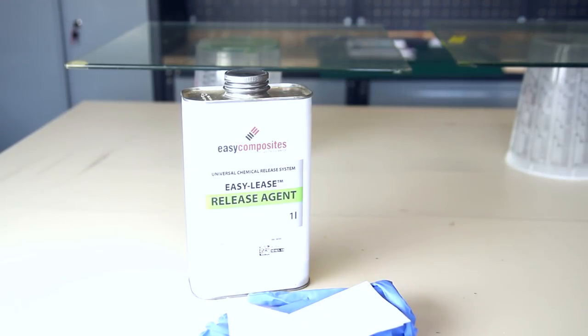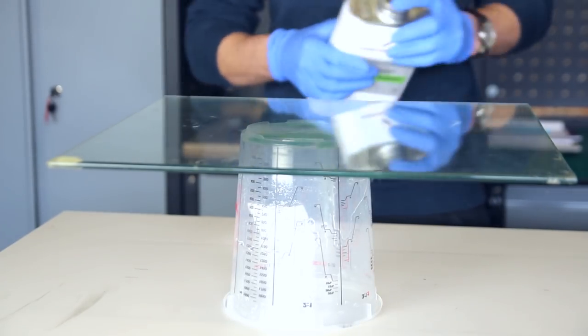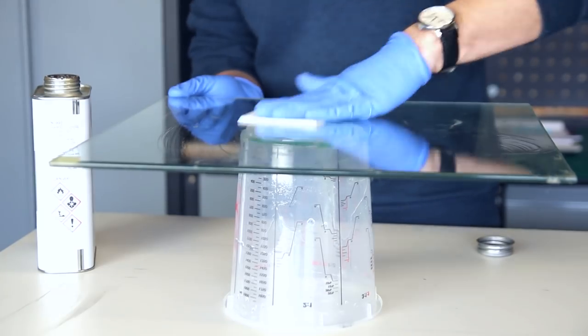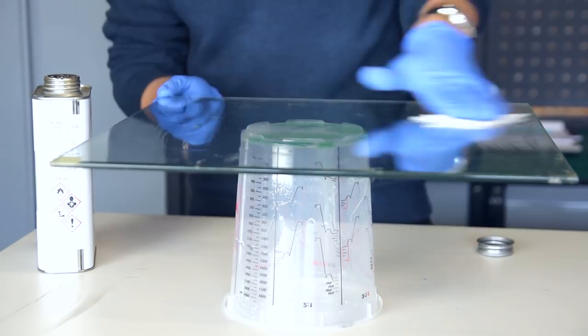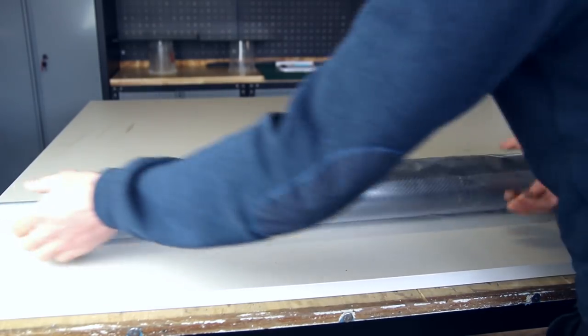It all starts by using glass plates and then we add the release agent to have a good release of the carbon fiber plates that we'll be making. This will be the resin infusion technique, and to my opinion this is the best technique to make pinhole-free samples or plates or even parts.